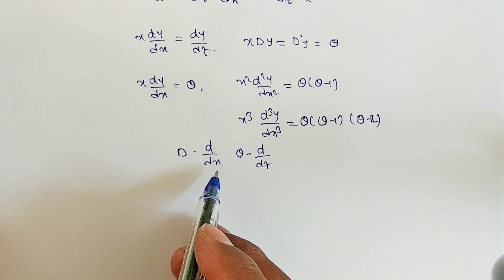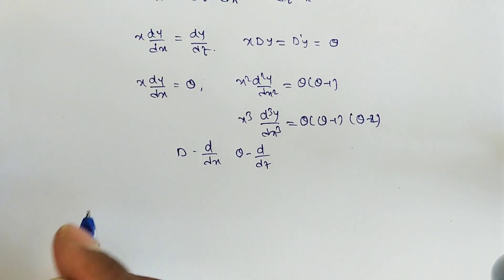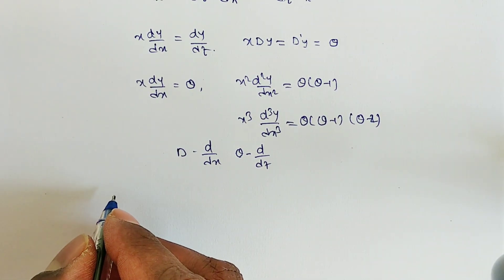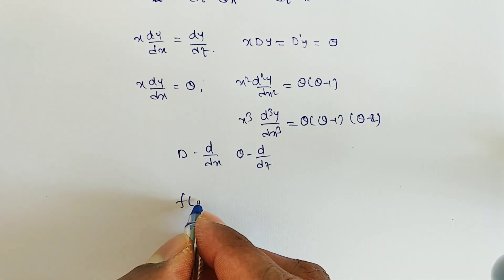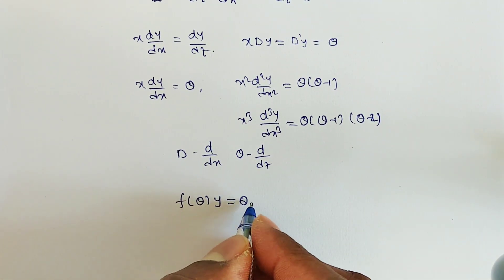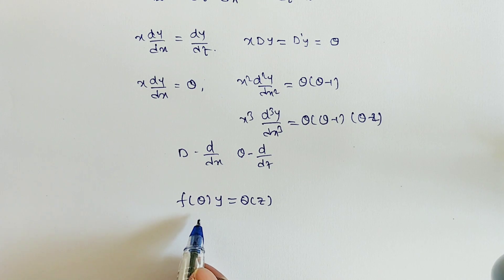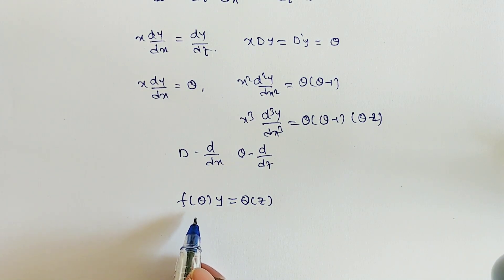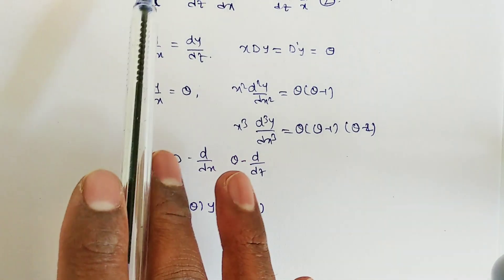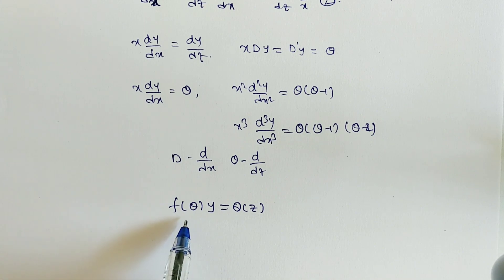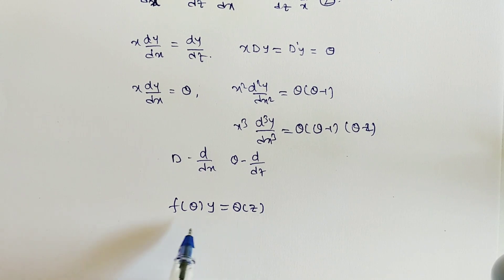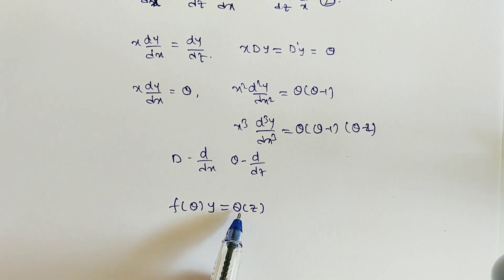When we substitute all these values into equation (1), we get the transformed form f(θ)·y = Q(z), where x is replaced by eᶻ. Now the variable coefficients have become constant coefficients. This is a constant coefficient linear differential equation, which we know how to solve. The general solution is y = complementary function + particular integral.